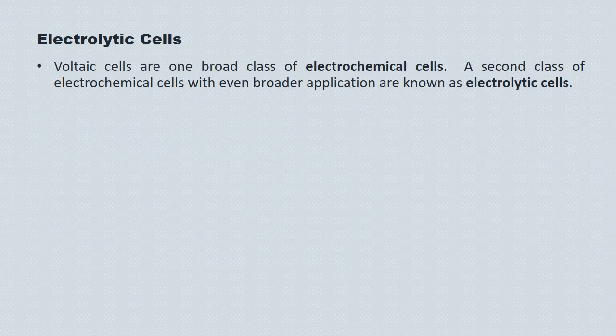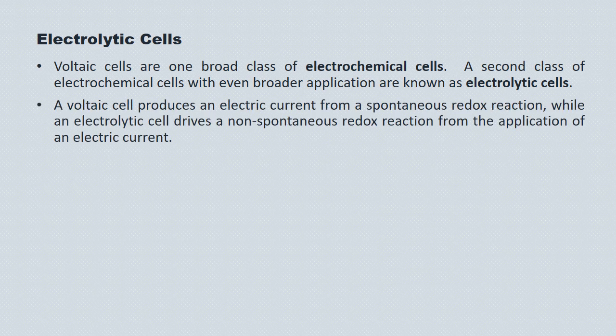We've looked at voltaic cells — they're one broad class of electrochemical cells. The second class is known as electrolytic cells. We know that voltaic cells produce an electric current from a spontaneous redox reaction. Electrolytic cells, on the other hand, drive a non-spontaneous redox reaction from the application of an external electrical source.